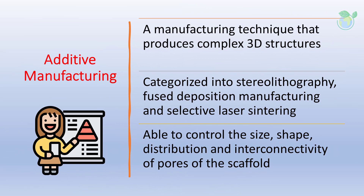Additive manufacturing refers to a manufacturing technique that builds complex 3D structures often from a blueprint in a layer-by-layer format. It is categorized into three areas: stereolithography, fused deposition manufacturing, and selective laser sintering. Additive manufacturing offers key benefits of precision, being able to control the size, shape, distribution, and interconnectivity of pores of the scaffold.